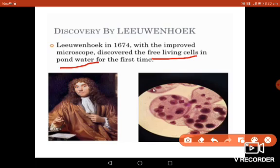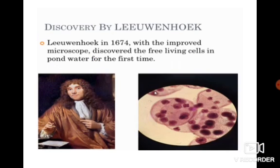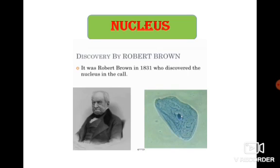He observed these free-living cells by taking a sample of pond water. Not knowing what to call them, he named them 'animalcules,' meaning organisms that show animal-like characters and movable features.